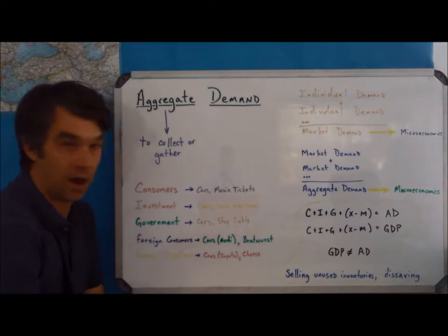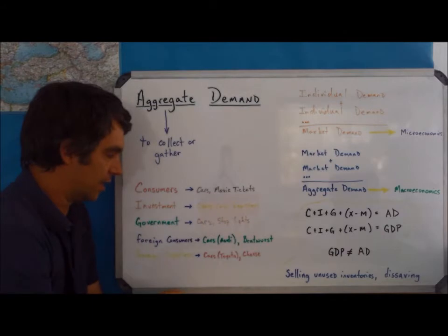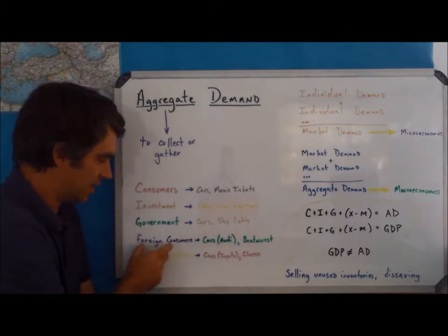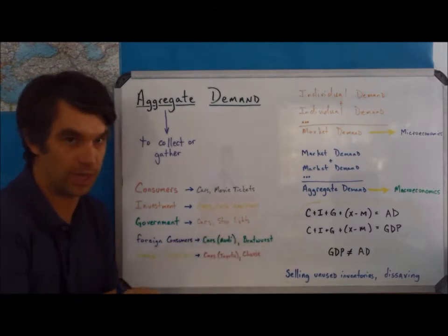Foreign consumers might buy cars, but they also might buy bratwurst. We must be in Germany here, because I'm talking about Audi and bratwurst. These are things that foreign consumers, so consumers outside of Germany, might buy from Germany.